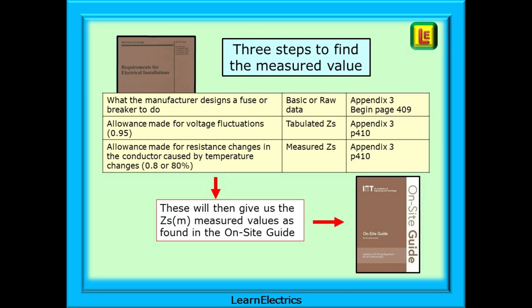There are three steps to finding the measured value for ZS. We start with finding the basic, or raw data, for a particular size of fuse or circuit breaker.